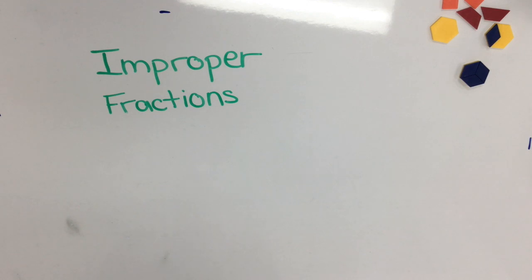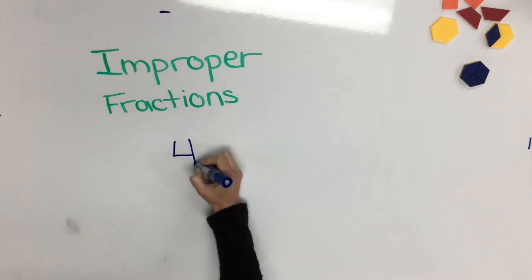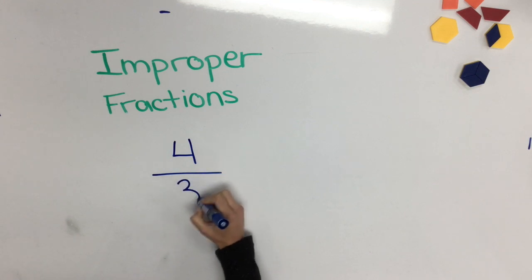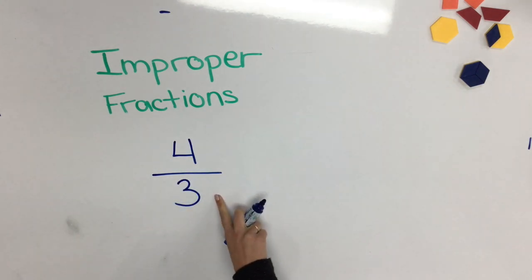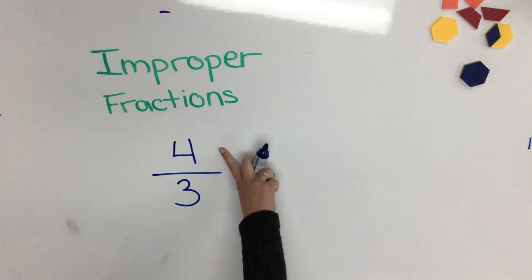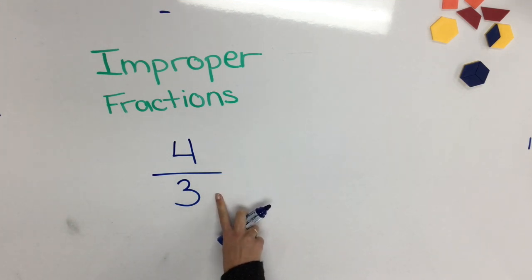So first let's start by asking what is an improper fraction? An improper fraction is anything that's larger on top than it is on the bottom. So for example four-thirds, the numerator is larger than the denominator so we would call it an improper fraction.